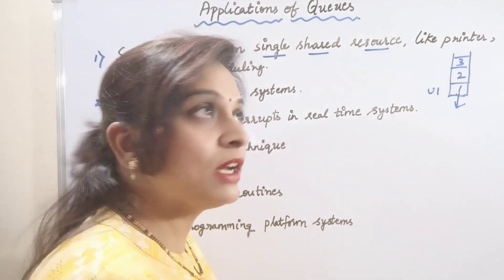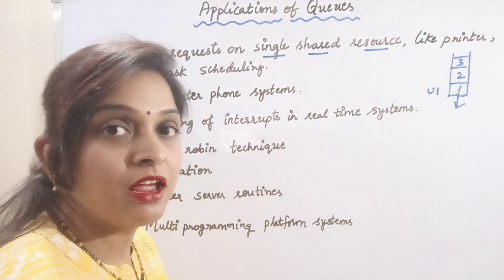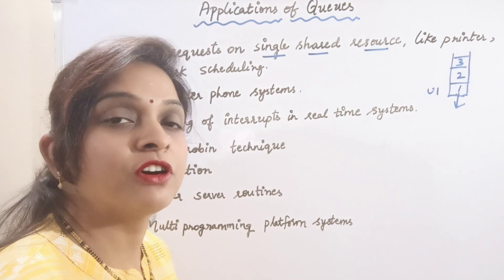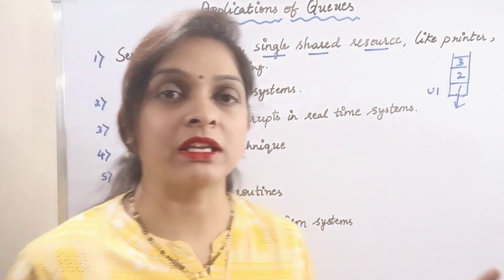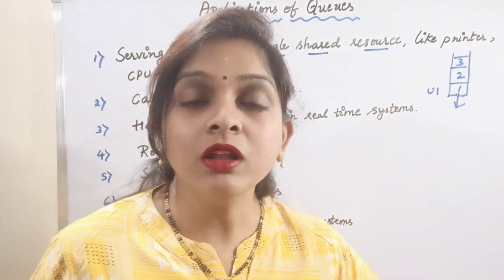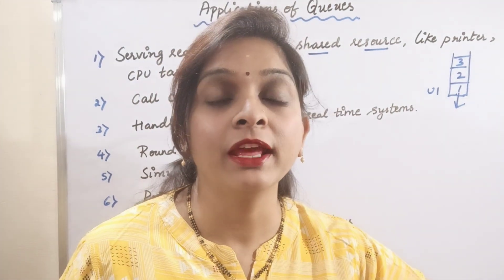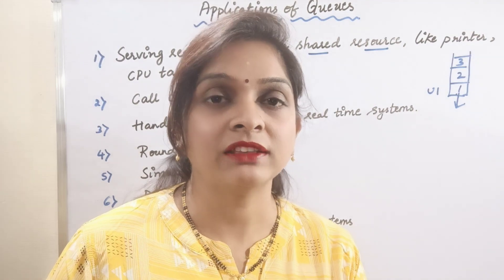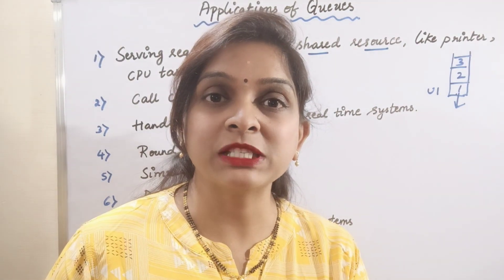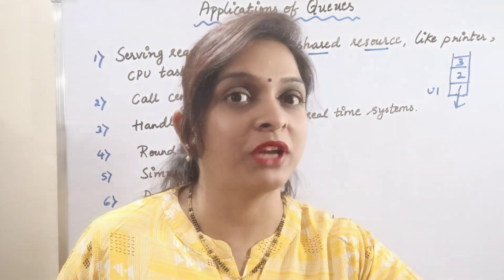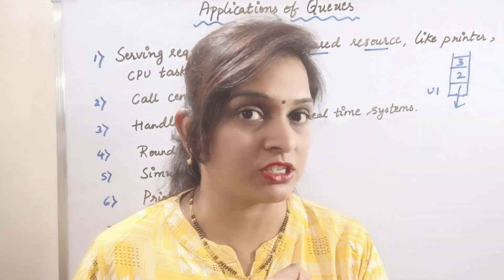This can happen only if we follow the queue data structure, because it has the ordering principle of first in first out. The first instruction given by the user will be the first to be executed. User 1 gives the print command, so user 1 gets the print first, then user 2. All the print commands are put into the printer pool, where data is executed one after the other. If you want to print a document, the first file comes out first, then the second, then the third — all following FIFO.